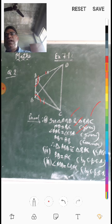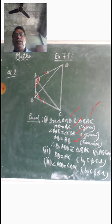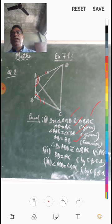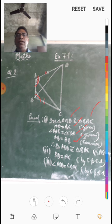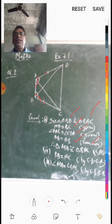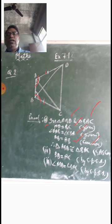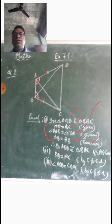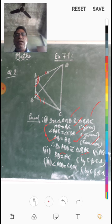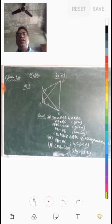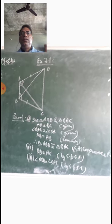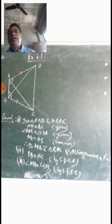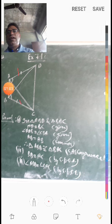AB is equal to AB — this is the common side shared by triangle ABD and triangle ABC. So these three conditions are satisfied for the two triangles. Therefore, triangle ABD is congruent to triangle BAC. The congruence works as: side equal, then angle equal, then side equal.